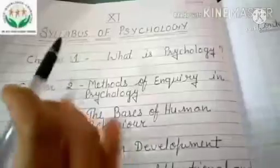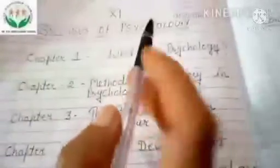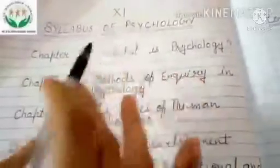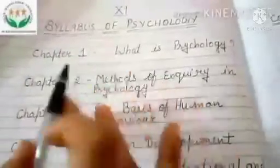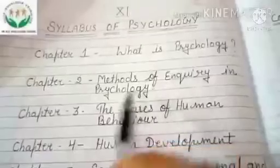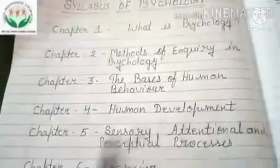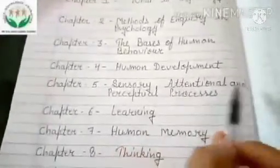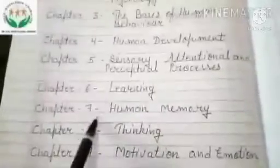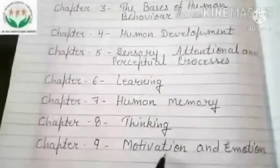Now we will discuss the syllabus and marking scheme and some general terms about psychology. There are nine chapters in your syllabus: Chapter 1 — What is Psychology; Chapter 2 — Methods of Inquiry in Psychology; Chapter 3 — The Basis of Human Behavior; Chapter 4 — Human Development; Chapter 5 — Sensory, Attentional and Perceptual Processes; Chapter 6 — Learning; Chapter 7 — Human Memory; Chapter 8 — Thinking.